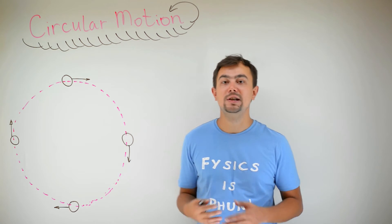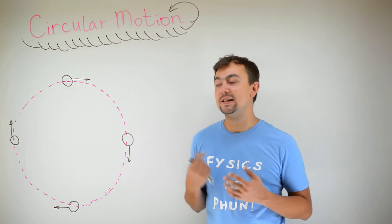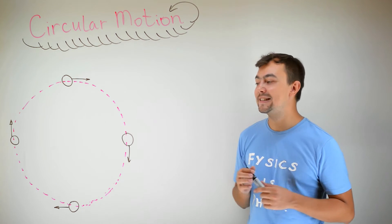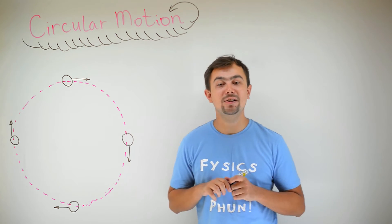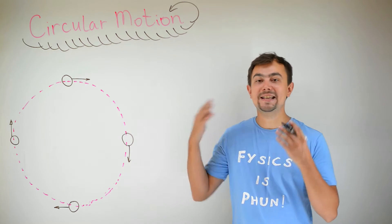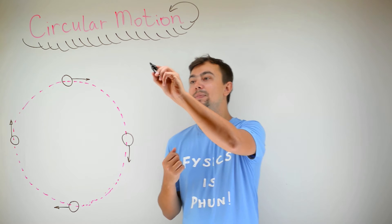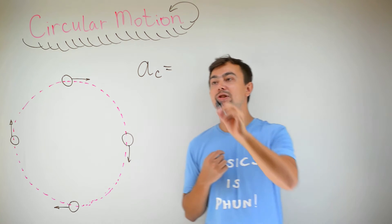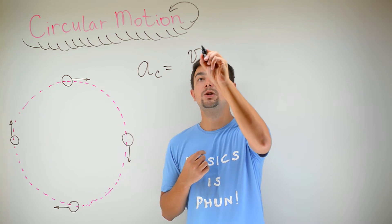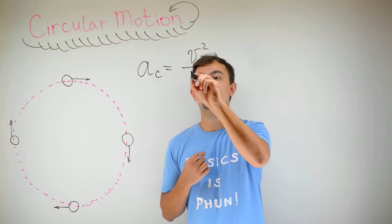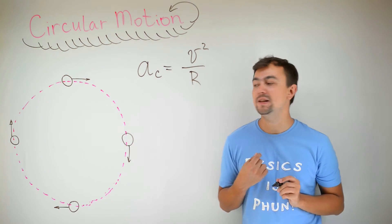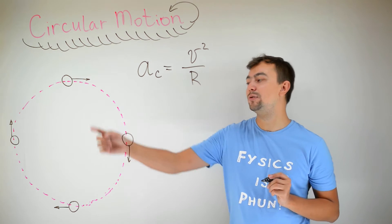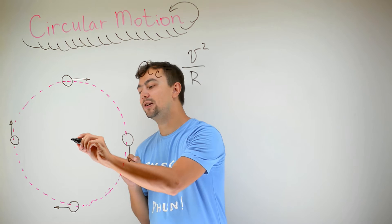And if the direction is changing, it means that the velocity is changing. And if the velocity is changing, that means that there is acceleration. In fact, the ball is accelerating with an acceleration which is called centripetal acceleration. And this centripetal acceleration is equal to v squared divided by r, where v is the speed of the ball and r is the radius of the circle.